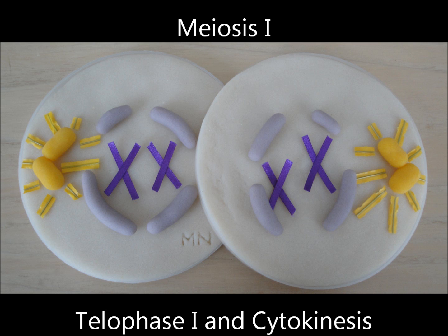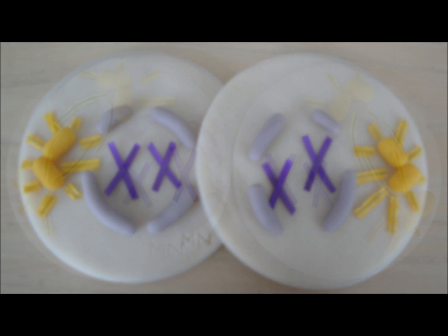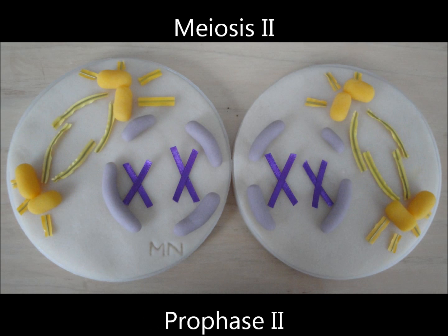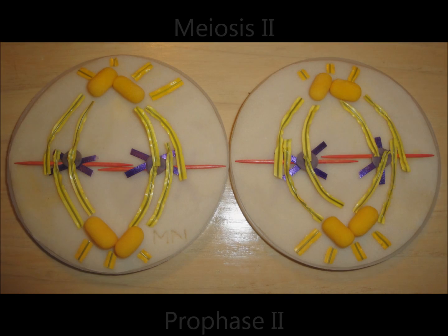Chromosome duplication does not occur between telophase I and the onset of meiosis II. In organisms having an interphase after meiosis I, the chromosomes condense again and the nuclear envelope, light purple play-doh, breaks down during prophase II, the first stage of meiosis II. A spindle forms, yellow twist ties, and moves the chromosomes, purple ribbons, toward the middle of the cell.